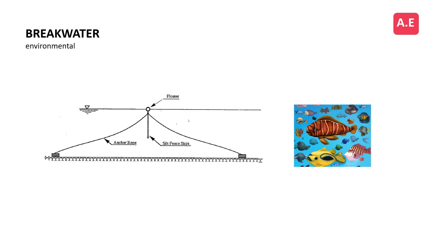Breakwaters are structures constructed offshore to protect the shoreline and coastal structures from the destructive forces of waves, currents, and storms. The construction of breakwaters should be carried out with care for the environment to prevent negative impacts. Before constructing a breakwater, an environmental impact assessment (EIA) should be conducted to determine the potential environmental impacts of the project. The EIA should identify the sensitive areas that need special protection during the construction process. Measures should be taken to protect marine life, including temporary relocation of fish and other species in the area. Silt curtains should be used to prevent sedimentation and protect sensitive habitats. All waste generated during the construction process should be disposed of in a manner that does not harm the environment, and any debris or waste that enters the water should be removed promptly. Overall, it is crucial to take appropriate environmental care measures during the construction of breakwaters to ensure the protection of sensitive marine habitats and minimize negative impacts on the environment.